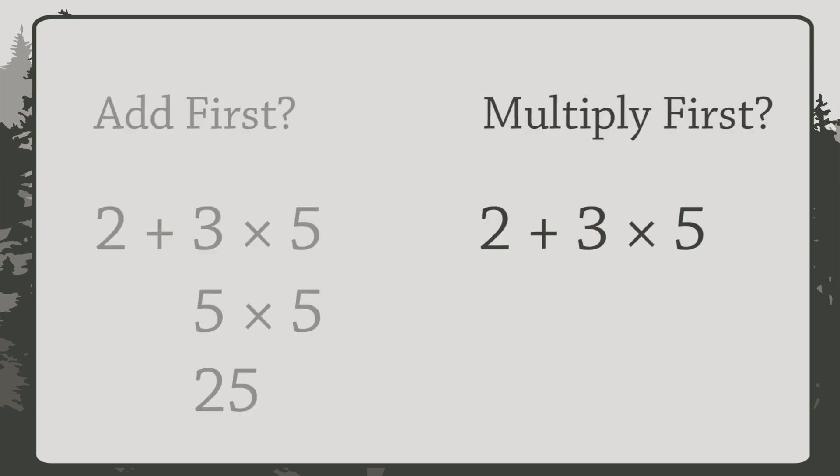Now look what happens if we do the multiplication first. 3 times 5 equals 15. So we have 2 plus 15. And 2 plus 15 equals 17. If we add first, we get 25. And if we multiply first, we get 17.